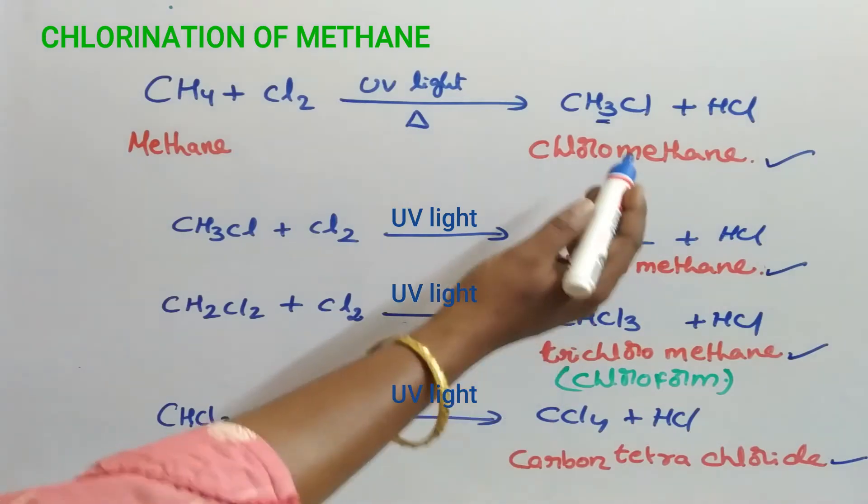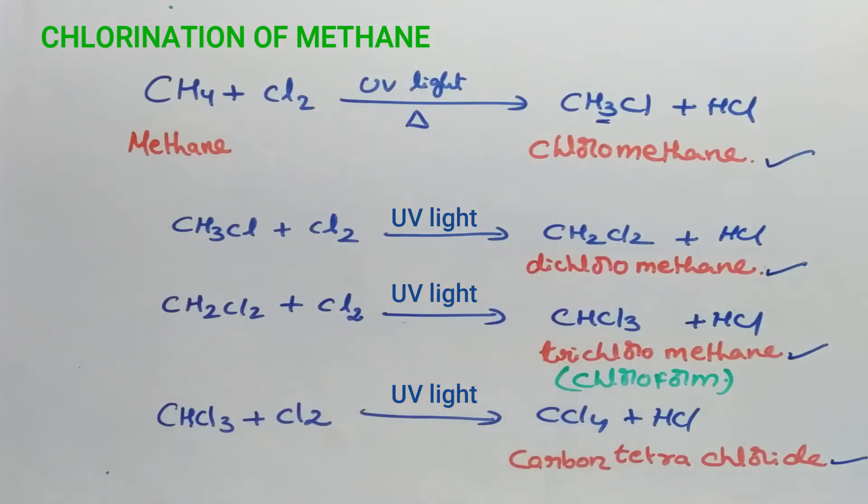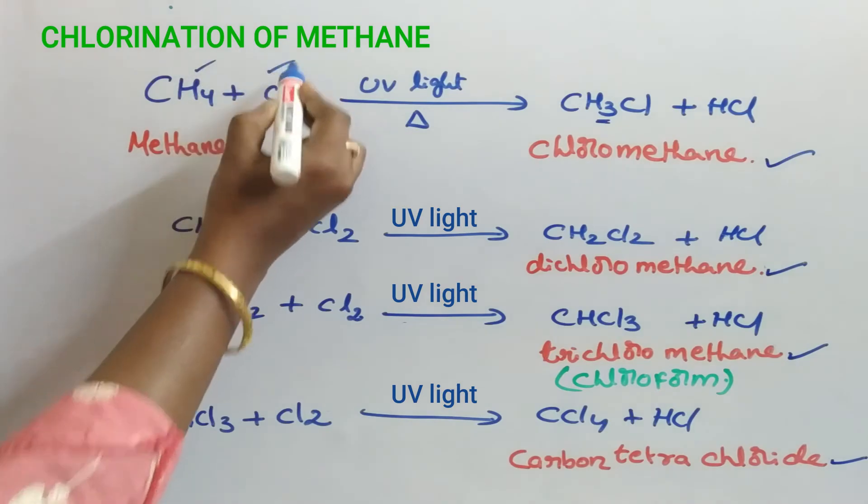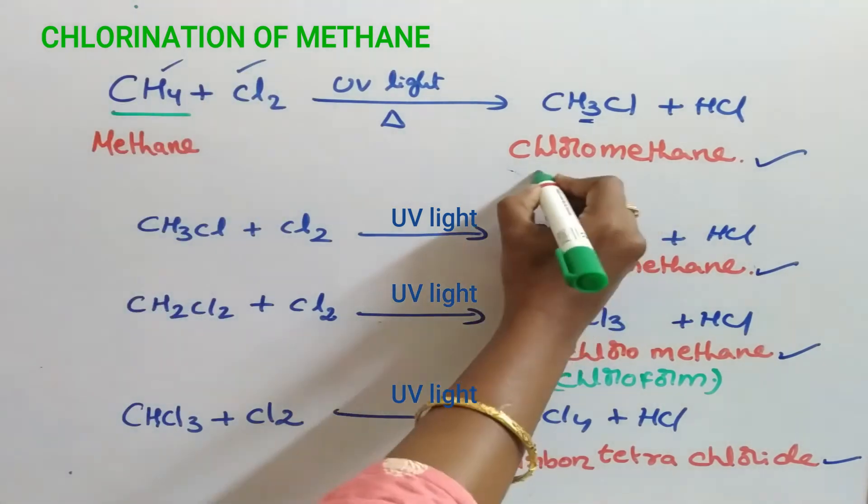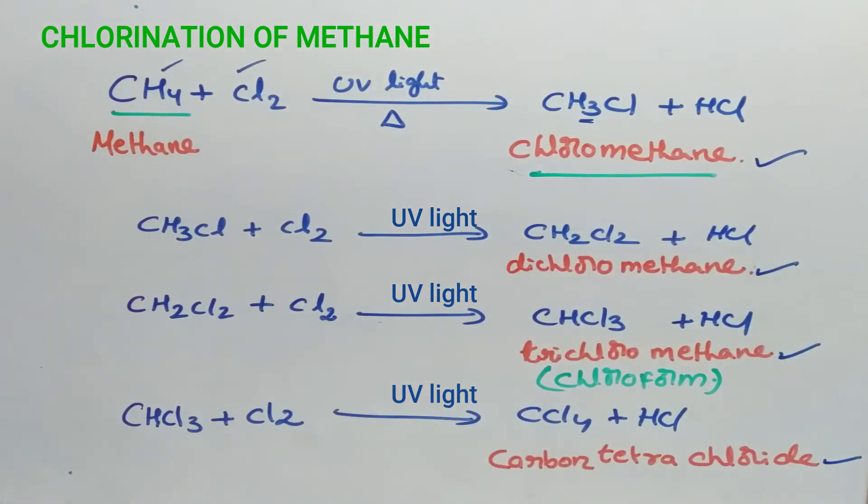The extent to which each product is formed depends upon the initial methane and chlorine ratio. If an excess of methane is used, chloromethane is the major product, or if an excess of chlorine is used, the major product is carbon tetrachloride.